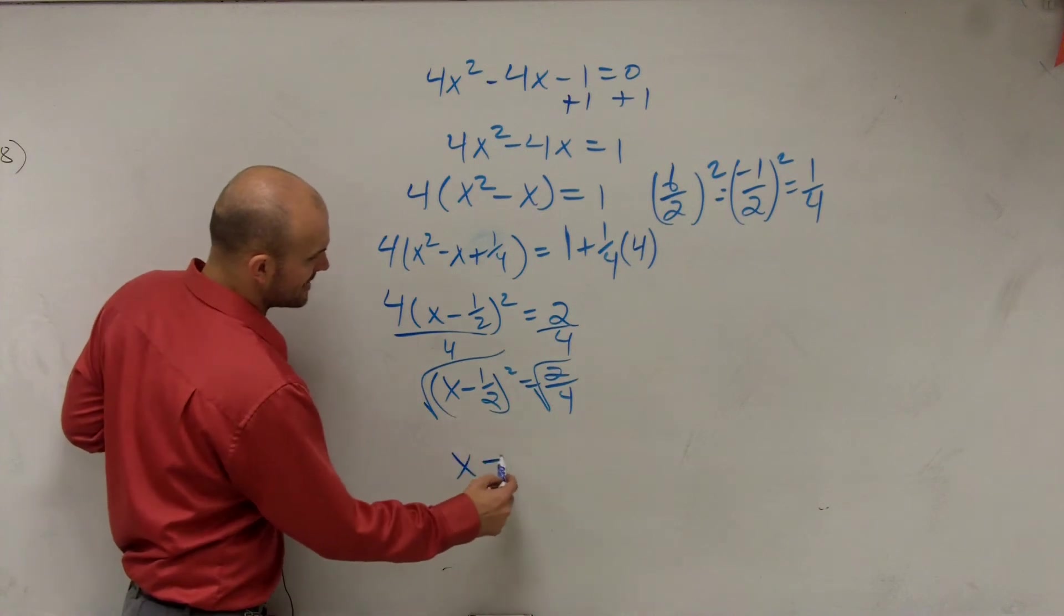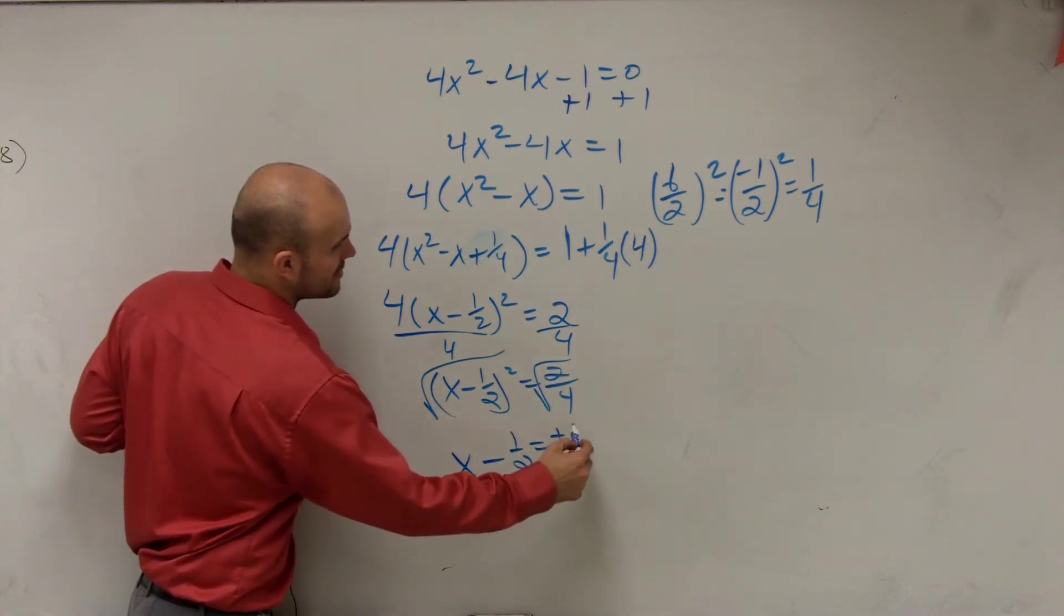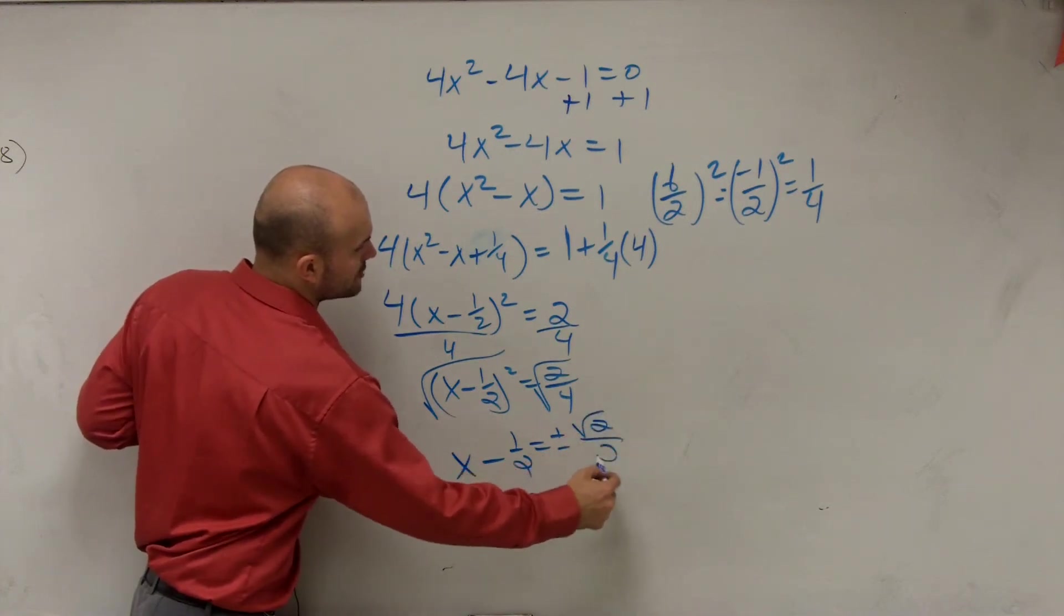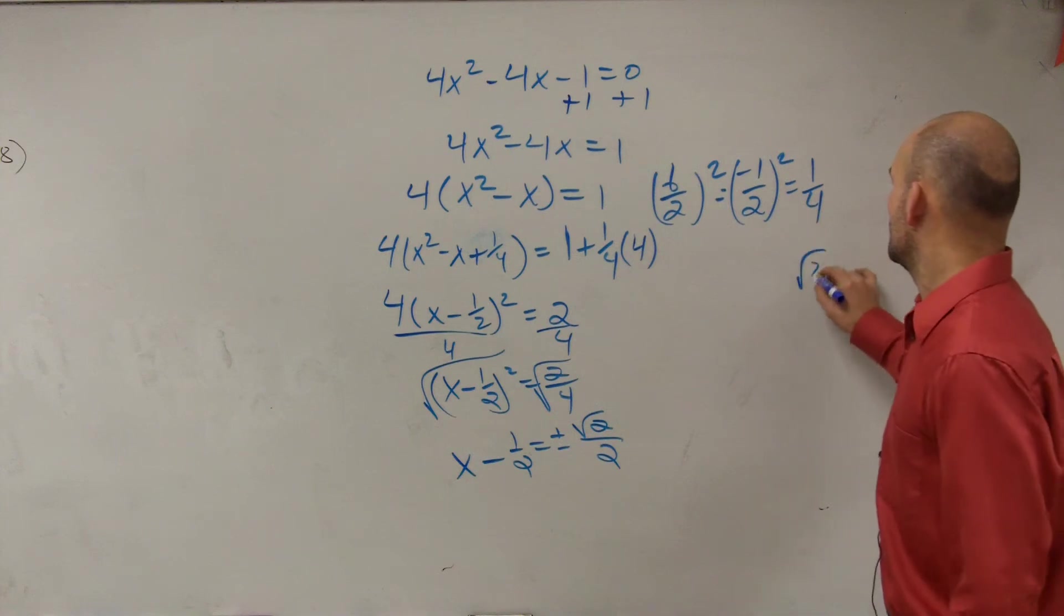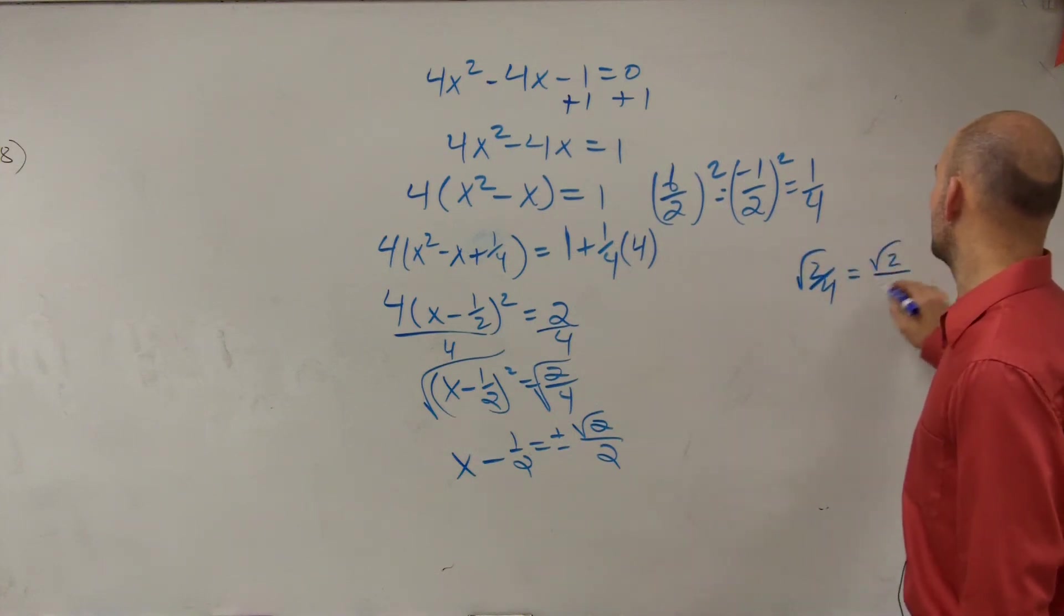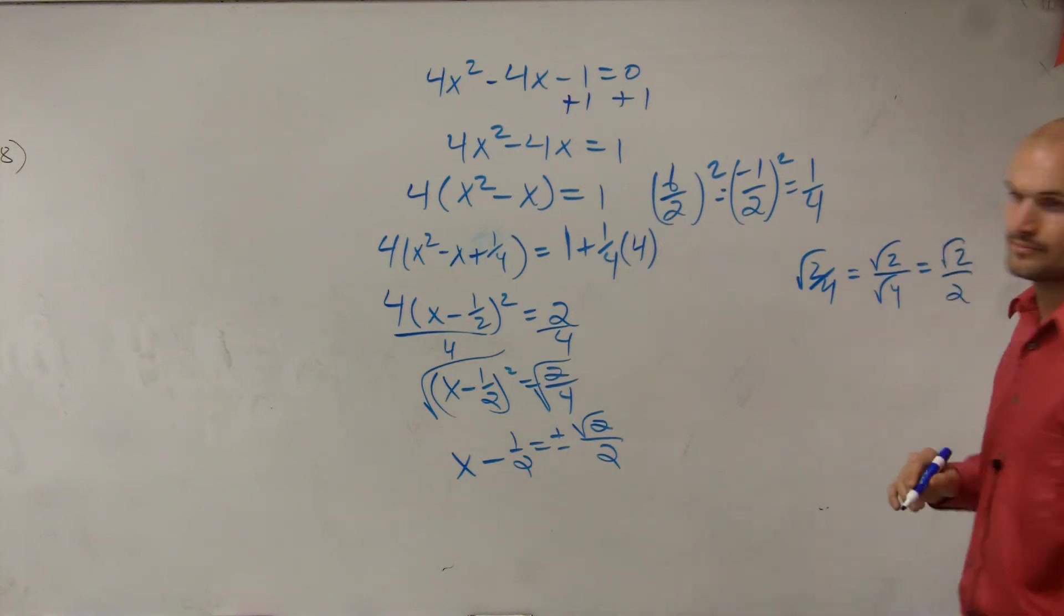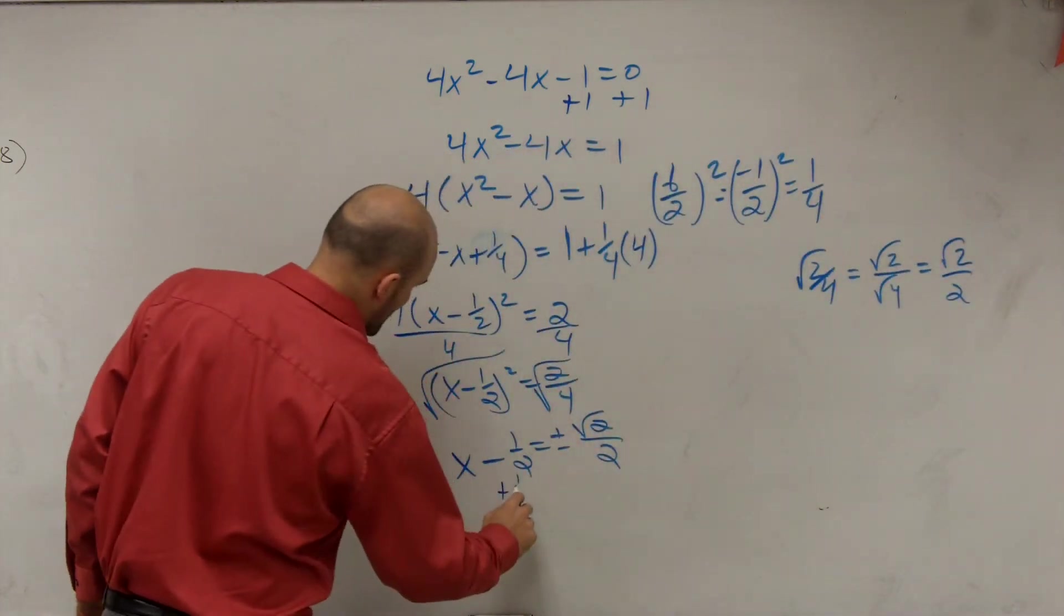So therefore, this brings me to x minus 1 half equals plus or minus the square root of 2 over 2. How did I get that? Square root of 2 over 4 equals the square root of 2 over the square root of 4, which equals the square root of 2 over 2. OK? That's how I got there. Remember, you can break that up into top and bottom. So therefore, now, I just add 1 half to the other side.